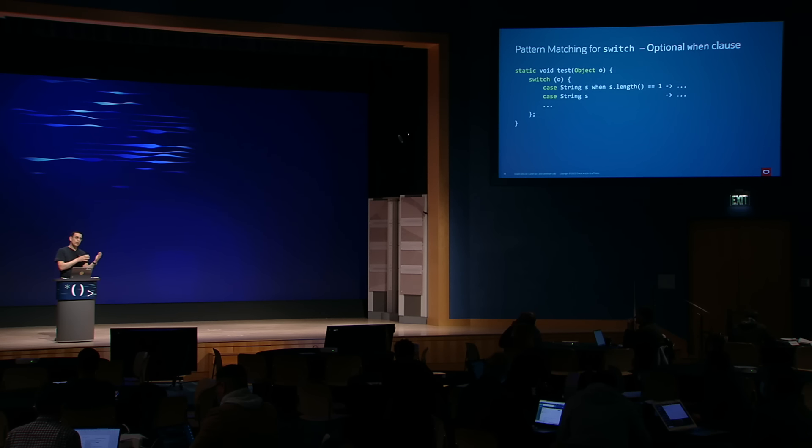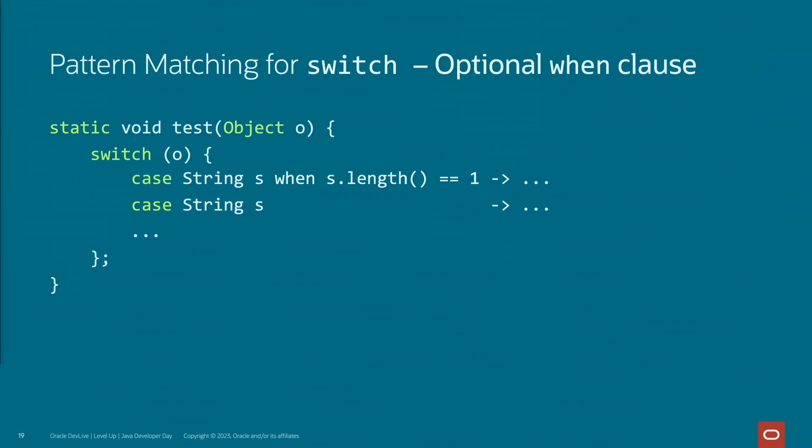We have to be careful with the order of these expressions. If we were to invert the order, then case String s would catch every string, including those of length one, and that would be a dominating pattern — one pattern would dominate the second one. Doing so will result in a compile-time exception. Switch statements also need to be exhaustive, so you may want to include a default value, unless you're enumerating on an enum or sealed class and covering all possible values.